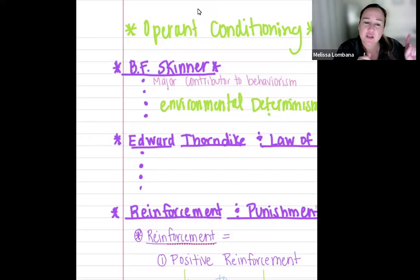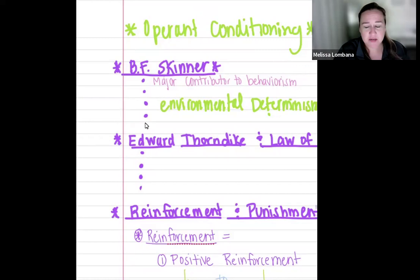He does acknowledge genetics, so he doesn't totally ignore the biological, but he doesn't say that that's a major factor in our behaviors. Now we're going to go to another guy you definitely need to know — his name is Edward Thorndike — and he came up with the Law of Effect.